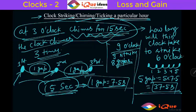Number of gaps will always be 1 less than the hour. So 9 strikes in 8 gaps that means 8 into 7.5 so it is 60 seconds. So it will take 60 seconds to strike 9 o'clock the same clock in this one.